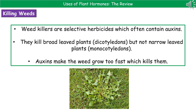Now we know some examples of hormones, we're going to look at some of their different commercial uses. The first one is one that you may well have used at home, which is killing weeds. When we're talking about a weed killer, we're talking about a selective herbicide, and these often contain auxins.